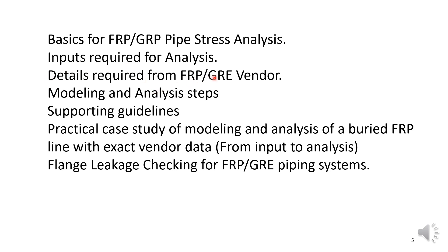Next, details required from the FRP or GRP vendor — since GRP and FRP pipelines are proprietary in nature, we have to take various inputs from the vendor. Then, modeling and analysis steps — how to model the system in CAESAR 2, how to analyze, and where to input what parameters, along with some supporting guidelines. Finally, we will learn a practical case study of modeling and analysis of a buried FRP line with exact vendor data, from input to analysis.